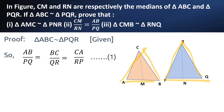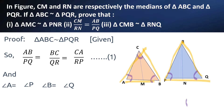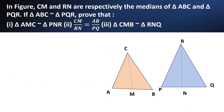Similarly, corresponding angles are equal: angle A is equal to angle P, angle B is equal to angle Q, angle C is equal to angle R. Let this be equation 2. Now let us solve the first question.